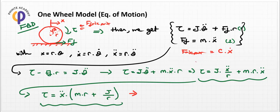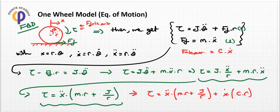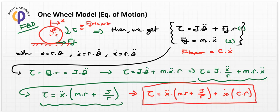So the torque value must equal x double-dot times (M times R plus J divided by R) plus c times R times x-dot. The R is needed to convert the force term into a torque unit (newton-meters), since the friction force is in newtons. This is our final equation representing the one-wheel model equation of motion in system dynamics.